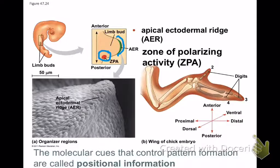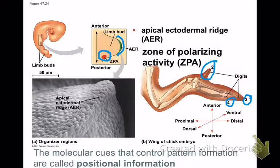In the limb, the longer digits — digits 4 and 3 — grow out next to the zone of polarizing activity, and the shorter digit, digit 2, grows out at the opposite end, where you would have the lowest concentration of these morphogenic proteins.